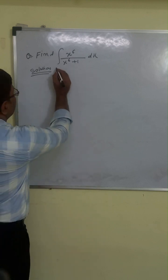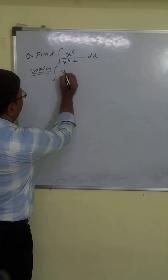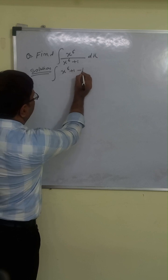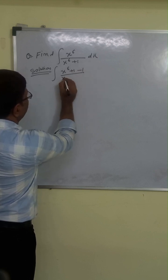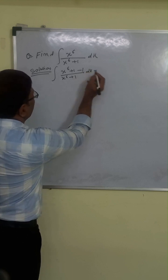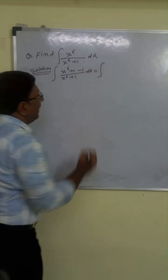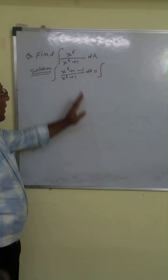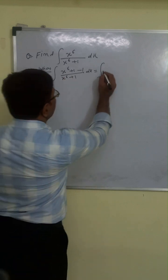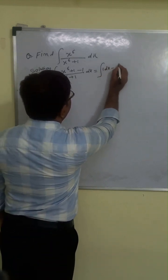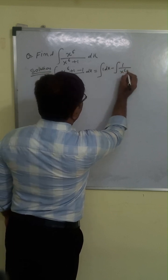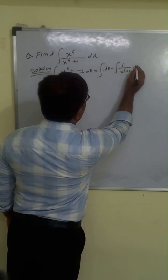So this becomes integration of x to the power 6 plus 1 minus 1, divided by x to the power 6 plus 1, dx. We can write this as x⁶ plus 1 divided by x⁶ plus 1 — which gives 1 — so this is integration of 1 dx, minus 1 upon x to the power 6 plus 1 dx.